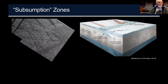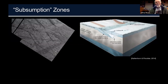We have analogs of spreading ridges, and we also have so-called subsumption zones — like subduction zones — where old, colder, denser ice crust of Europa is pushed under itself. Much in the same way we get volcanism as cold layers are shoved under each other on Earth, on Europa we get so-called cryo-lavas.